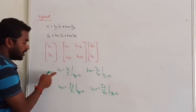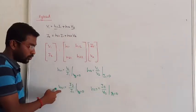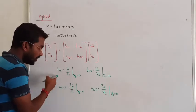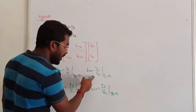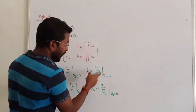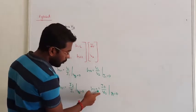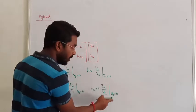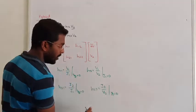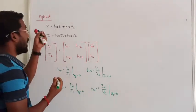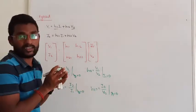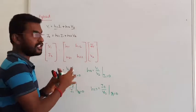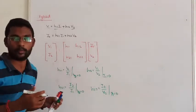When V2 = 0, those are short-circuit parameters. When I1 = 0, those are open-circuit parameters. That is why hybrid parameters are called a mixed version — they combine short-circuit and open-circuit conditions, making them a hybrid parameter set.